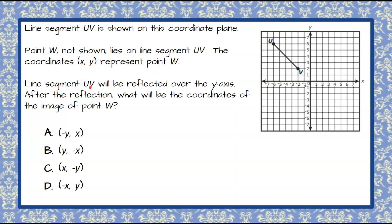Line segment UV will be reflected over the y-axis and after the reflection we're asked what will be the coordinates of the image of point W, and you're given four answer choices.